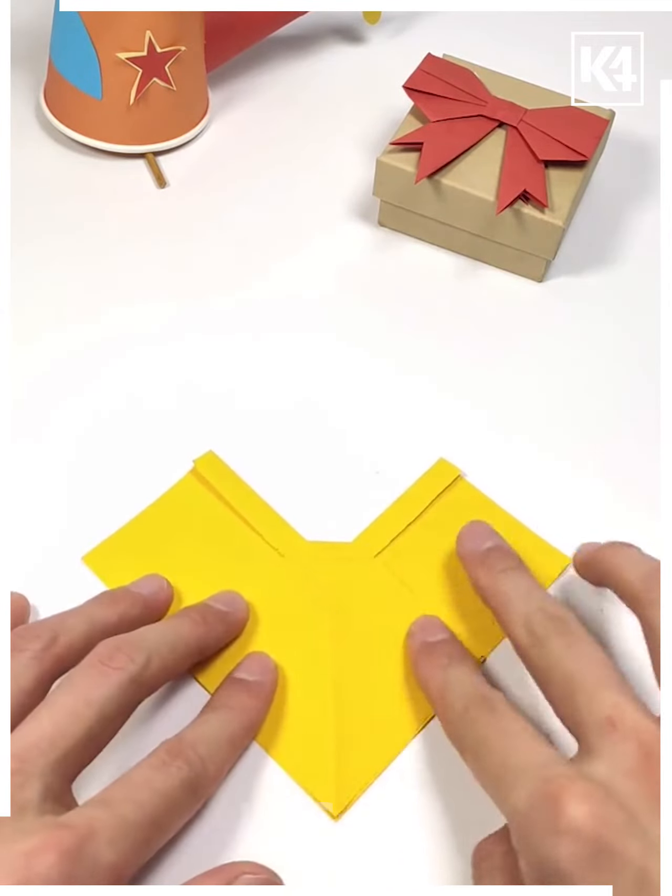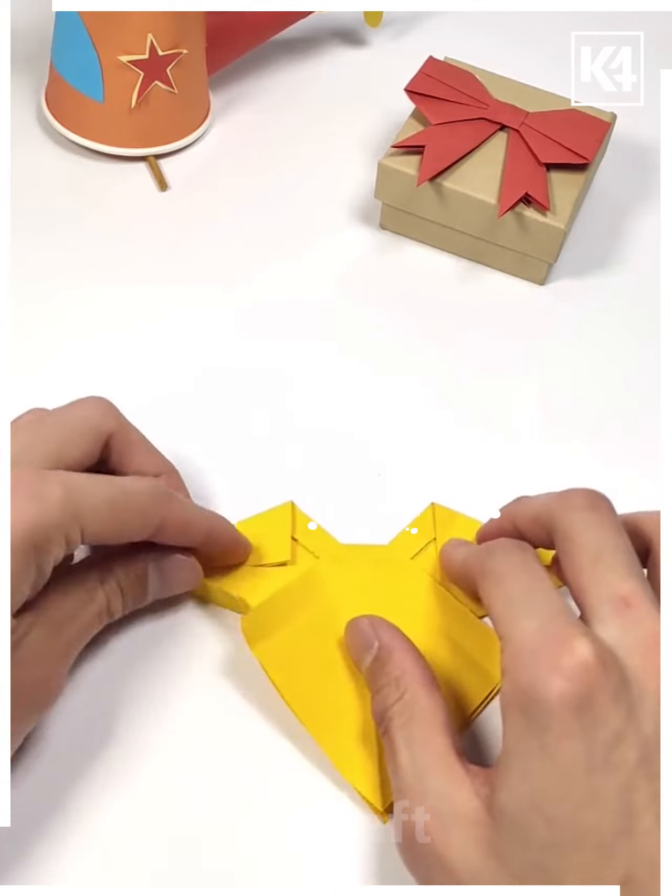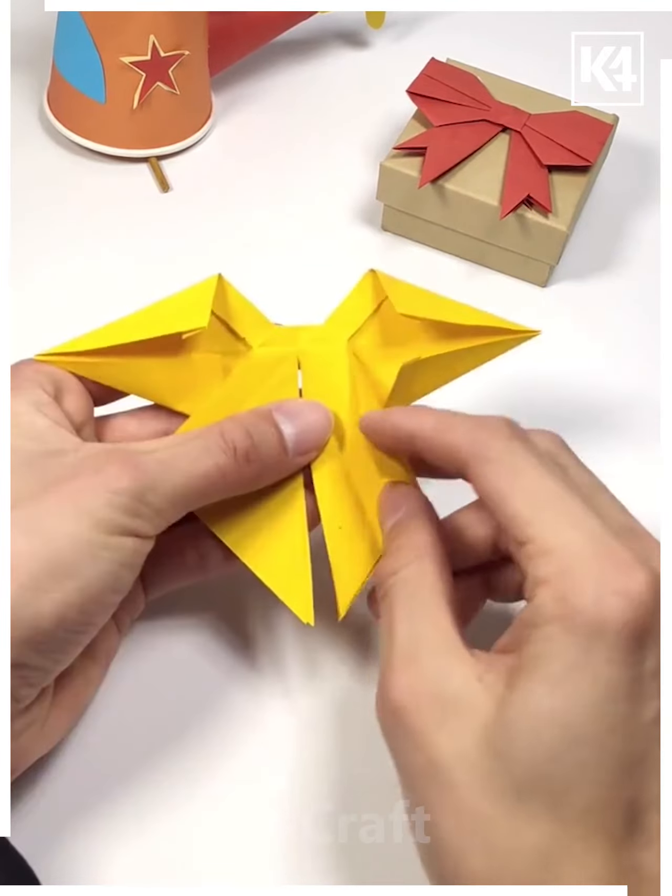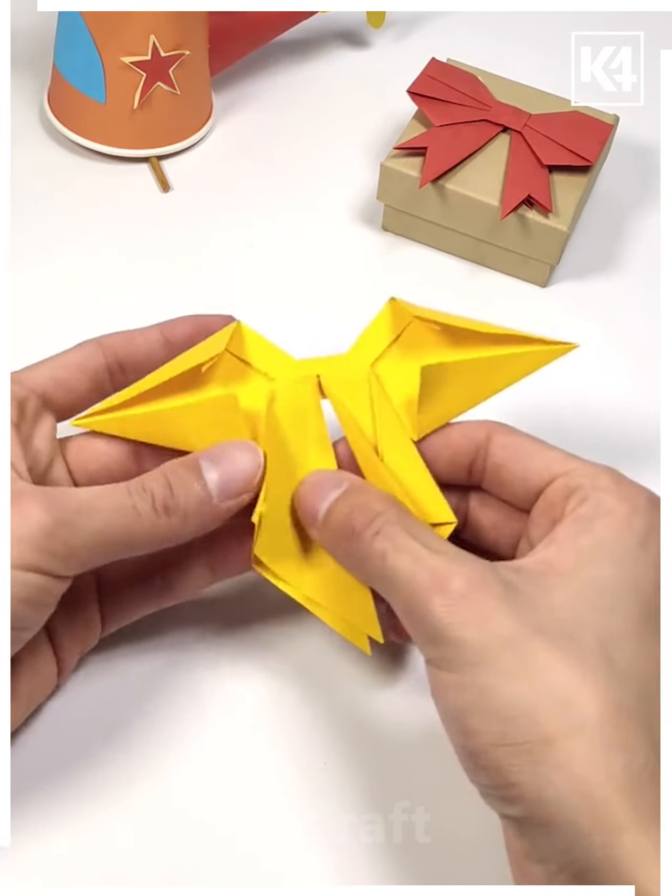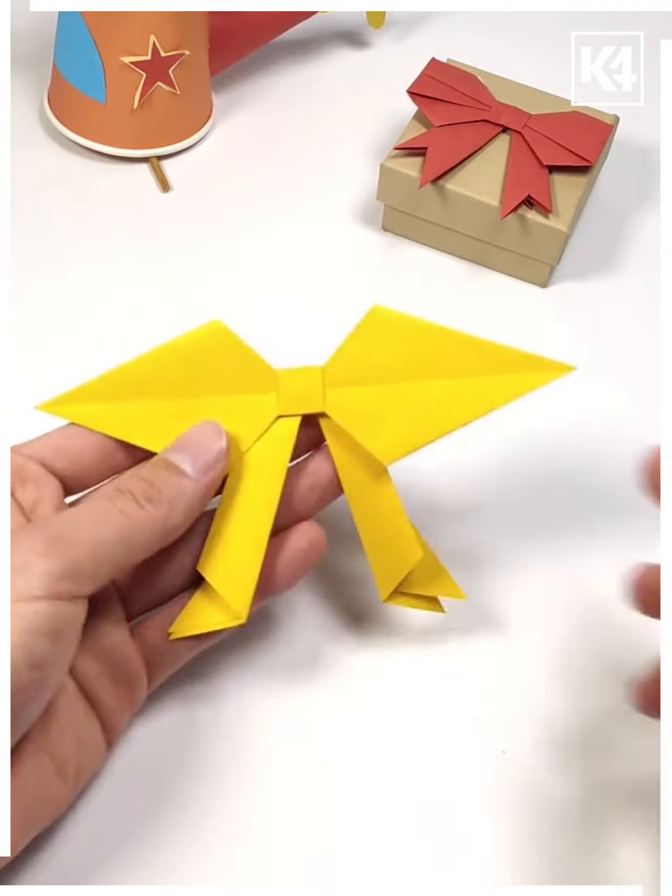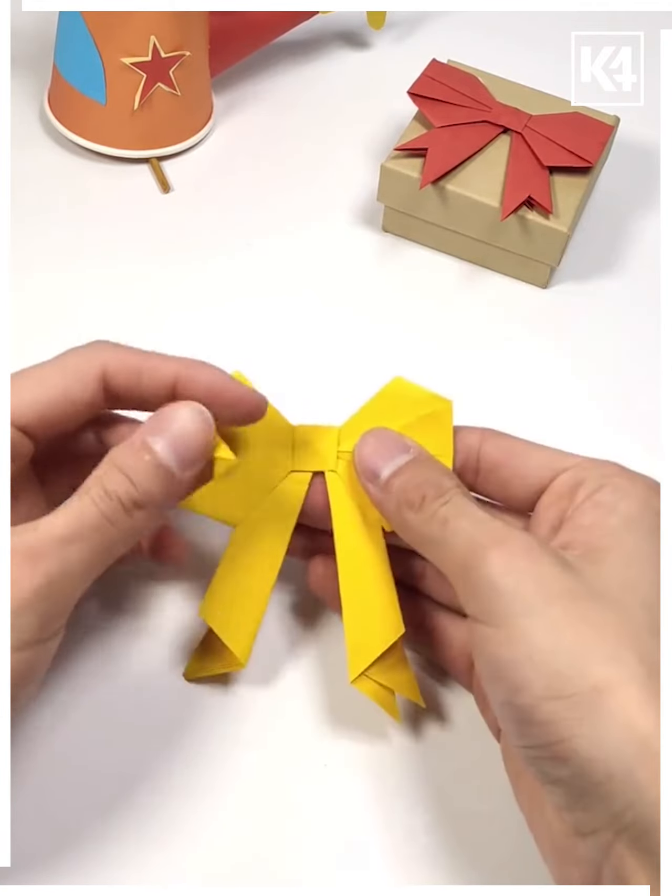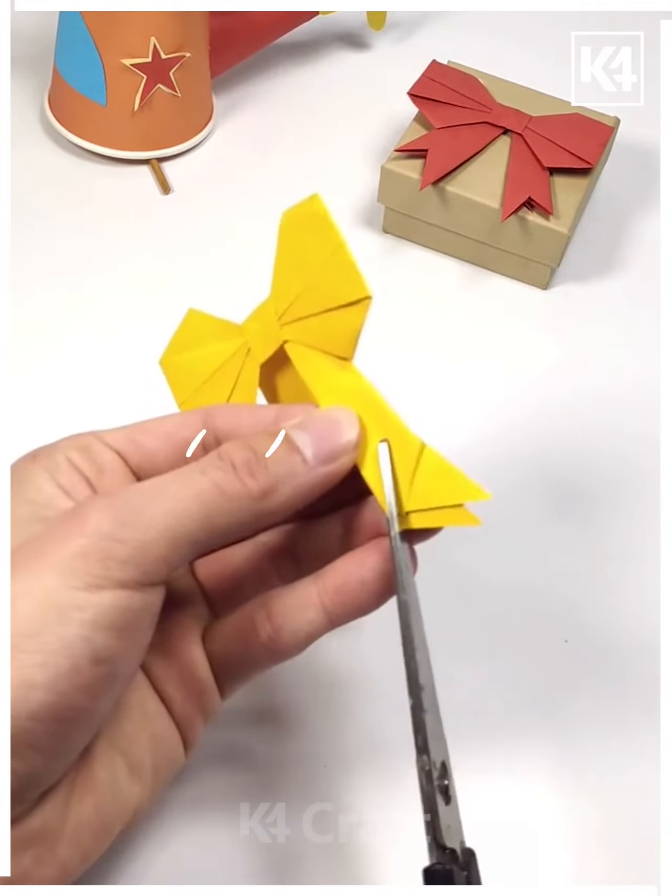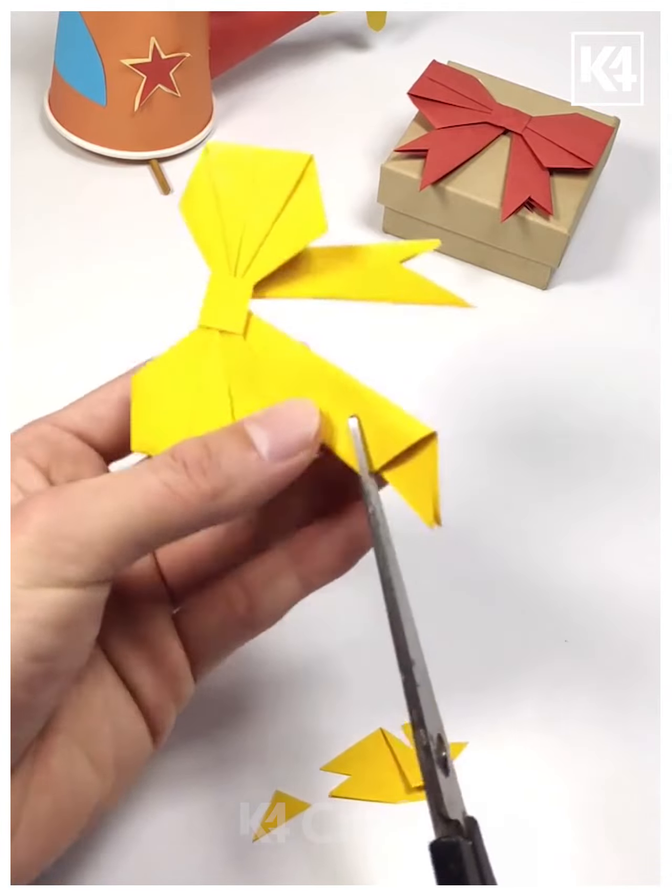As you can see, we are giving the shape to our bow. It is quite simple to make and very easy. Just follow the steps we are doing here. You can also secure it with glue.